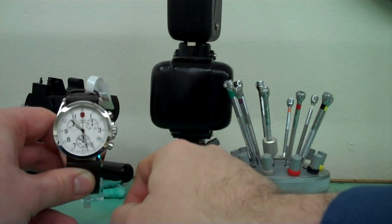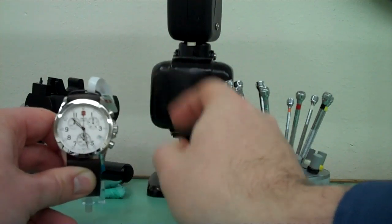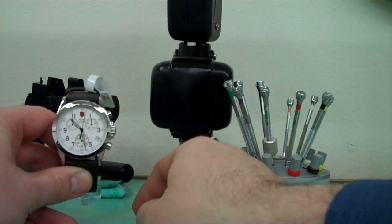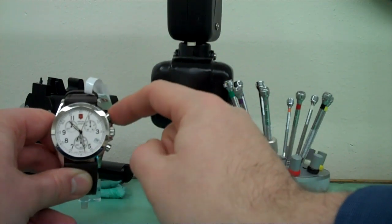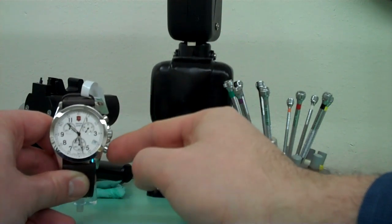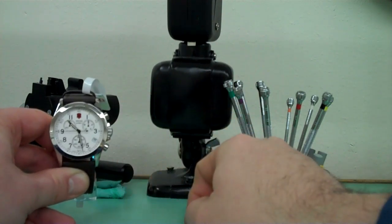Push the crown back into running position, and to test it, you press the 2 o'clock pusher to start the chronograph, press it again to stop it, press the 4 o'clock pusher, and everything resets to zero.